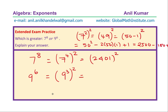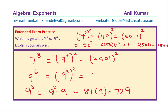And 9 cubed — 9 cubed is also known to you. 9 cubed is 9 squared times 9, which is 81 times 9. 9 times 1 is 9, 9 times 8 is 72 — so it is 729. Therefore 9 to the power of 6 is 729 whole square.